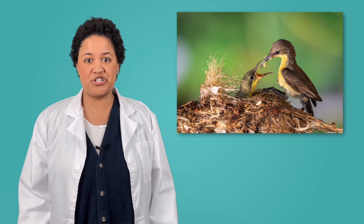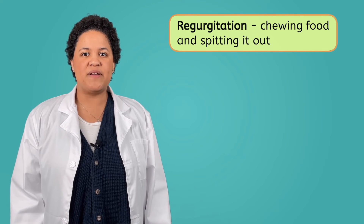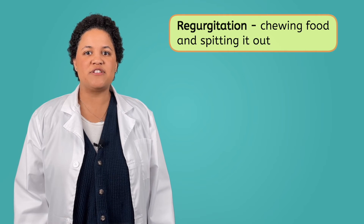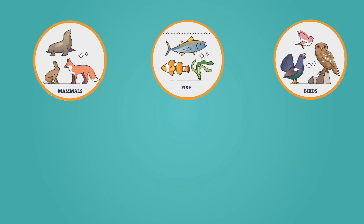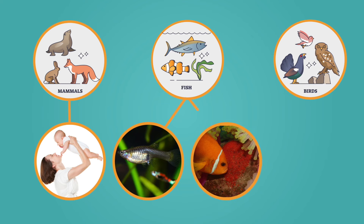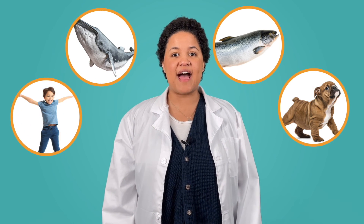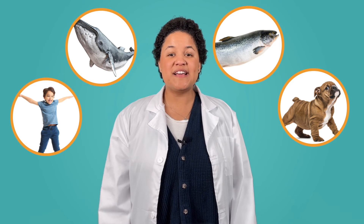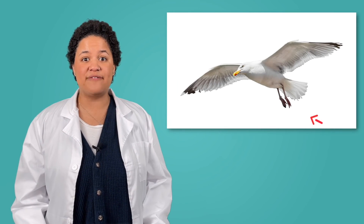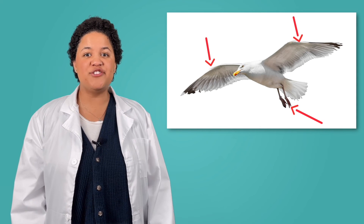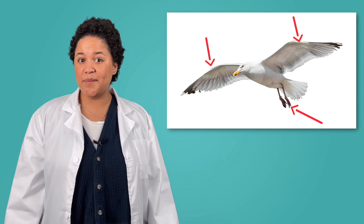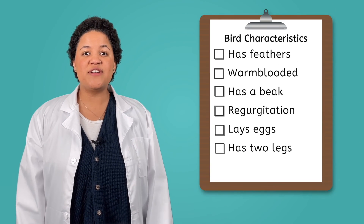What do birds feed their young? Instead of providing milk like mammals do, birds often feed their babies the same thing that they eat, only mushier. Many birds use something called regurgitation to feed their young. Regurgitation happens when a bird chews the food and spits it back out to feed to the baby. Here's another characteristic of birds: while all mammals give live birth and fish can either give live birth or lay eggs, all birds lay eggs in order to reproduce. And unlike fish, which have no legs, and mammals that can have no legs or two or four, to be classified as a bird the animal has to have two legs along with a set of wings.